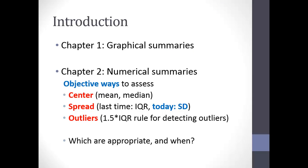Just to refresh your memories: in chapter one we talked about graphical summaries — ways of displaying data visually. We looked at pie charts, histograms, those kinds of things. In chapter two, we introduced ways to objectively assess numerical summaries about our data. We talked about measures of center, which was the mean and the median, and spread briefly, which was the interquartile range.